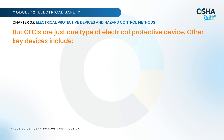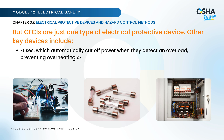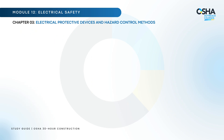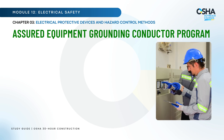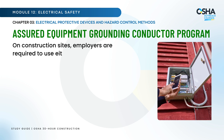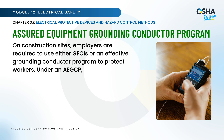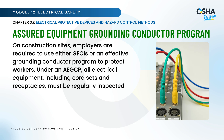GFCIs are just one type of electrical protective device. Other key devices include fuses, which automatically cut off power when they detect an overload, preventing overheating or fires; and circuit breakers, which also interrupt the flow of electricity when they sense an overload or short circuit. Next, let's discuss the Assured Equipment Grounding Conductor Program, or AEGCP. On construction sites, employers are required to use either GFCIs or an effective grounding conductor program to protect workers. Under an AEGCP, all electrical equipment — including cord sets and receptacles — must be regularly inspected to ensure safe use.